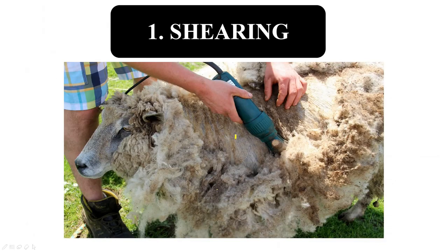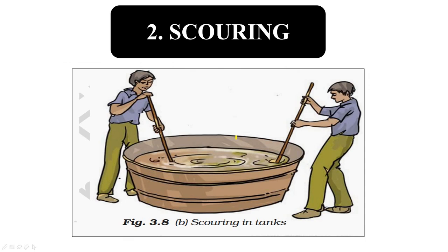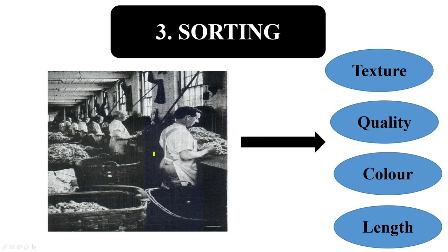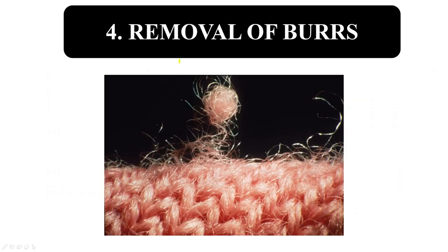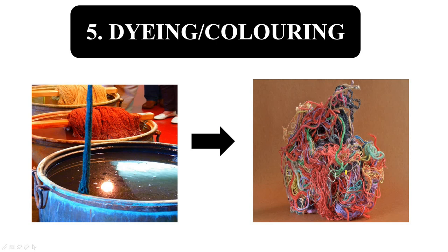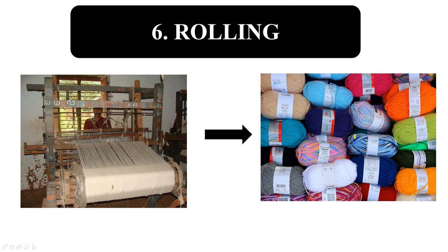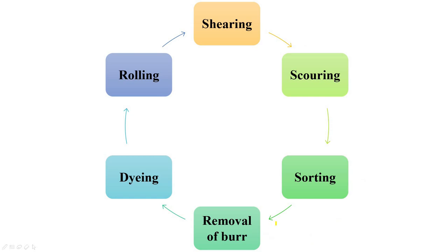Let's review all six steps of processing of wool. First: shearing — removal of hair along with a thin layer of skin. Second: scouring — washing fibers to remove dirt, dust, and grease. Third: sorting — separating fibers by texture, quality, color, and length. Fourth: removal of burrs — picking out fluffy fibers. Fifth: dyeing — coloring fibers in different colors. Sixth: rolling — converting fibers into yarns by the process of spinning. You have to remember these six steps — they are very important.